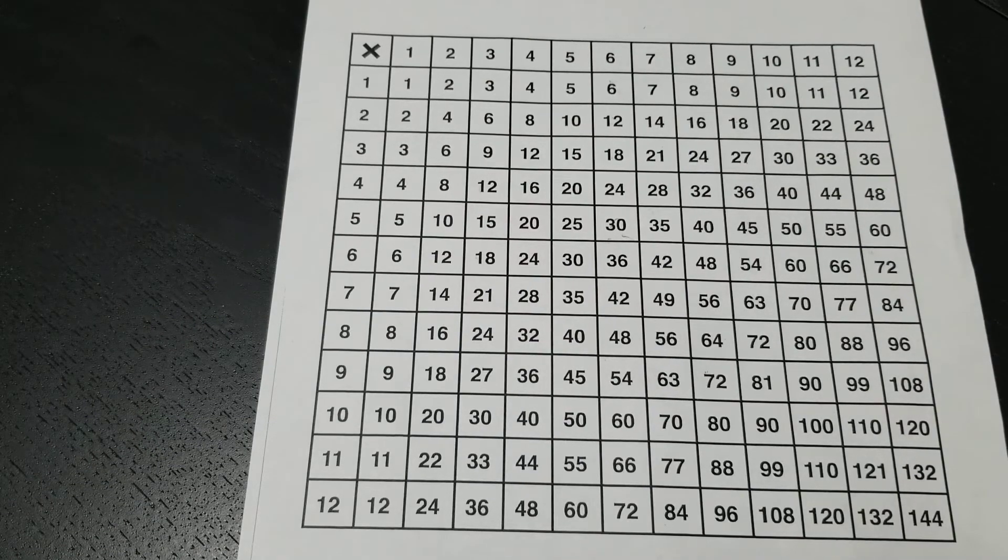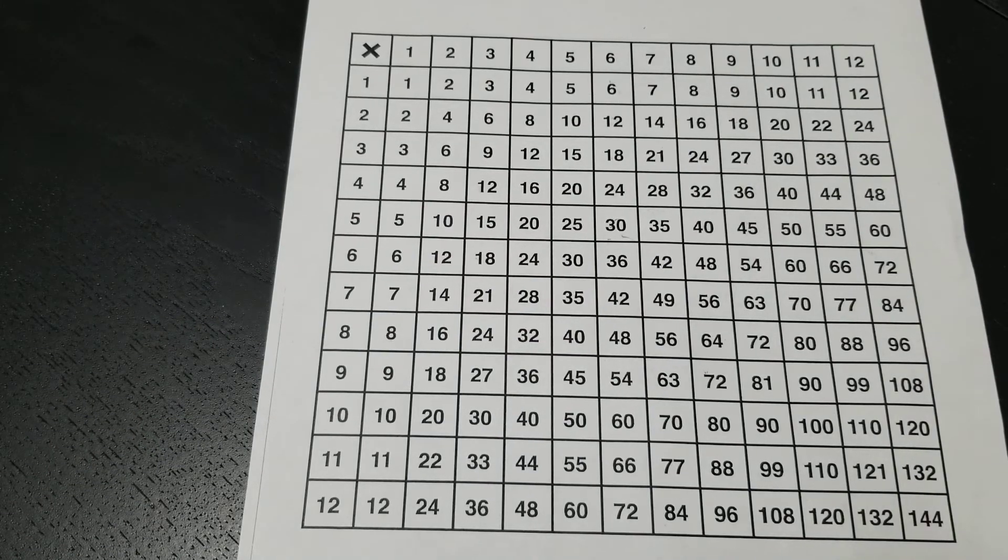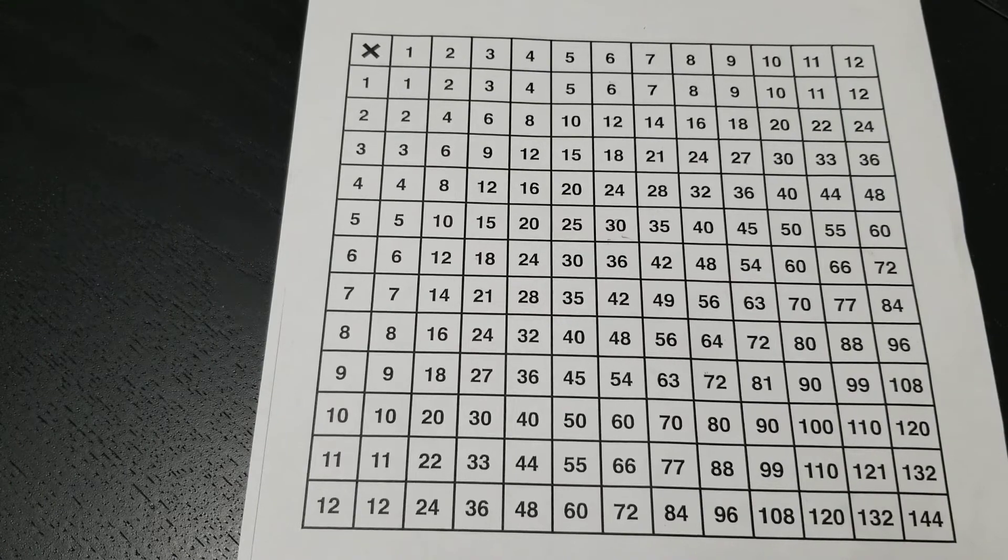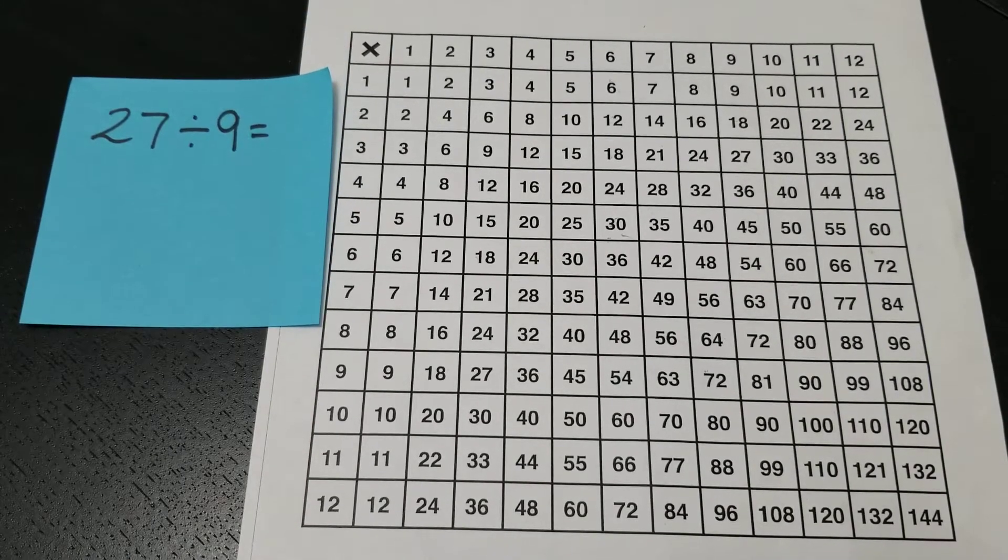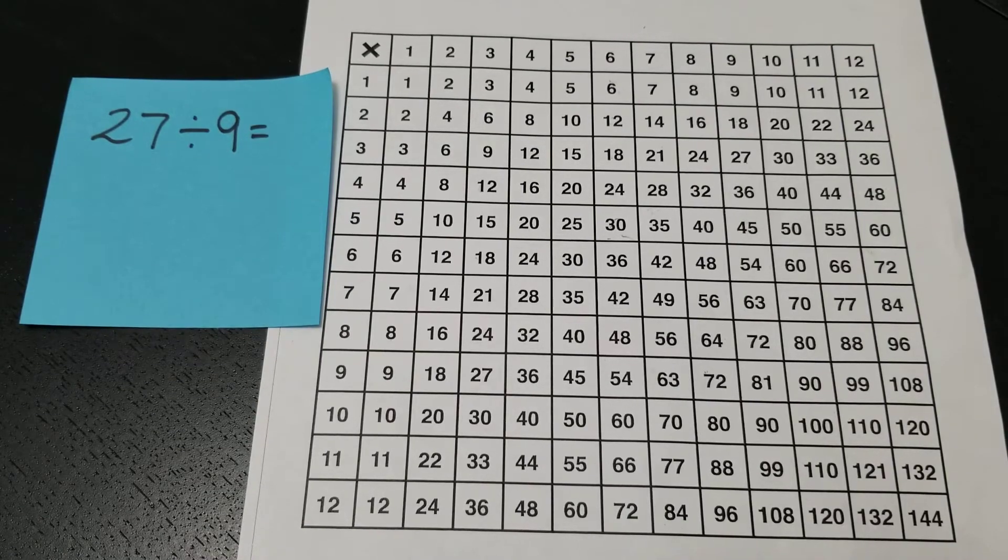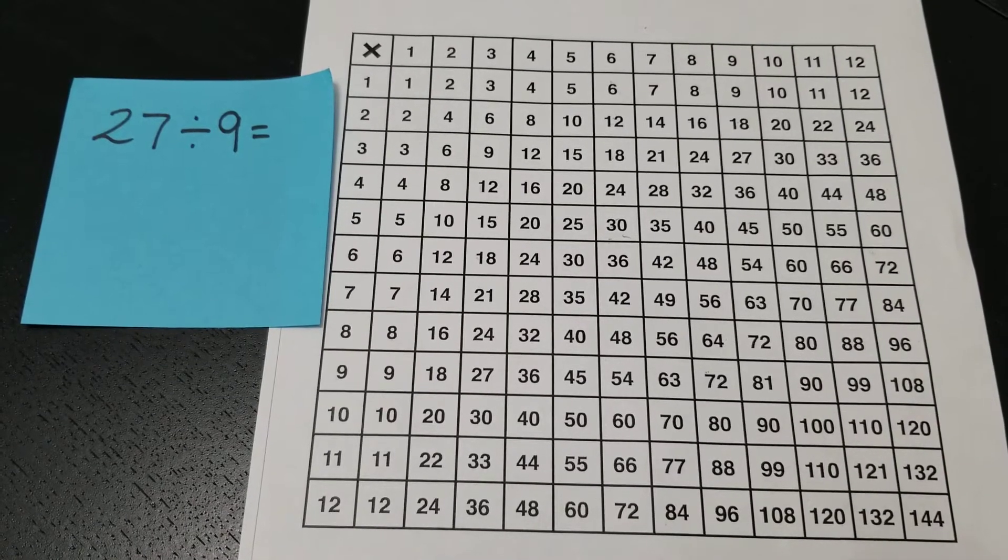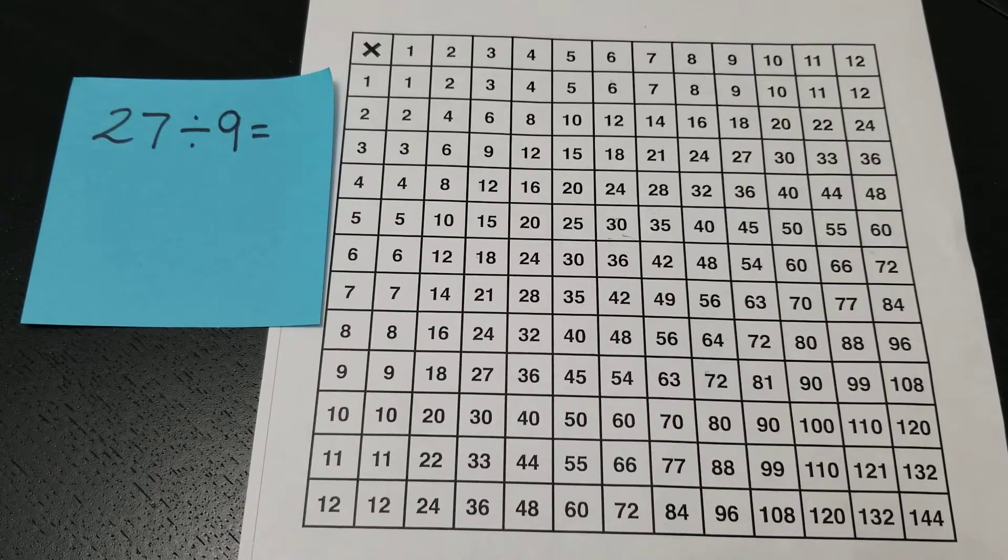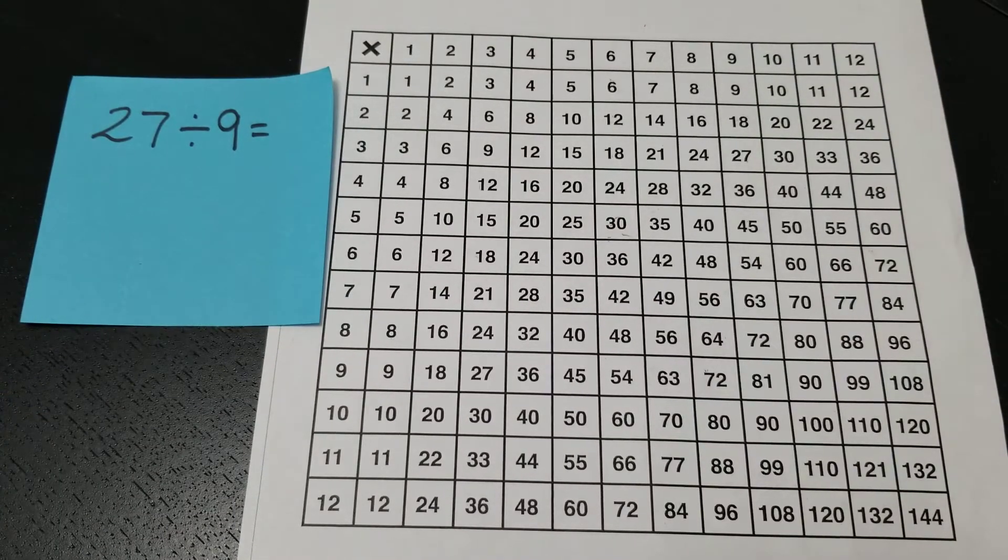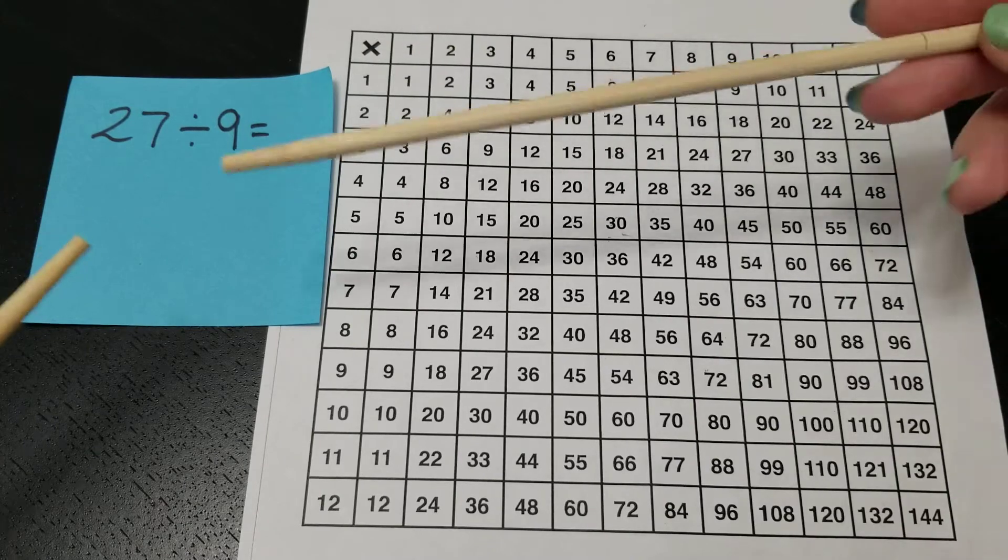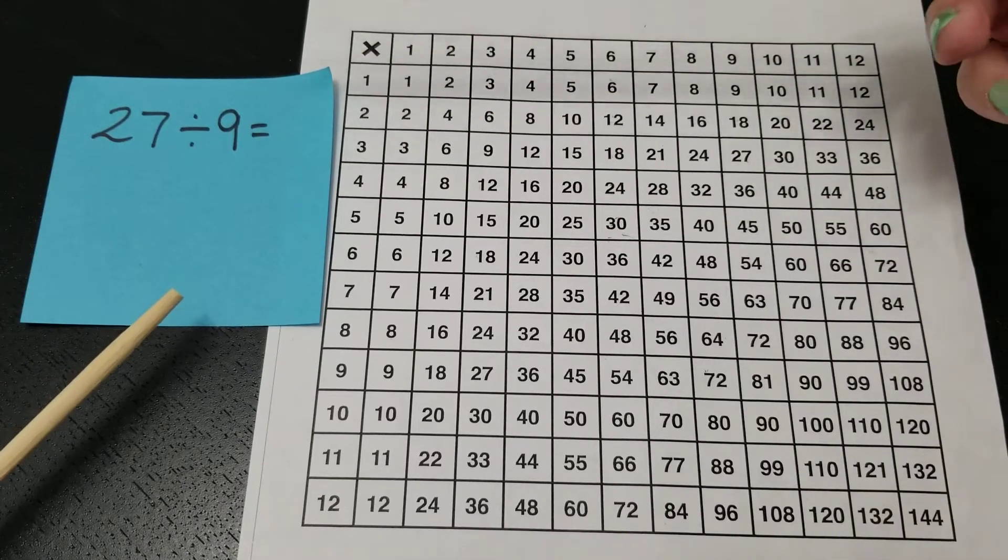Solving a division problem to find a quotient is very similar. You start with your division problem, let's use 27 divided by 9 for example. The first step in solving your division problem with a multiplication chart is to find one of your factors, or in this case, your divisor.